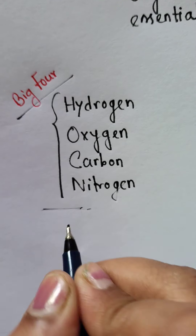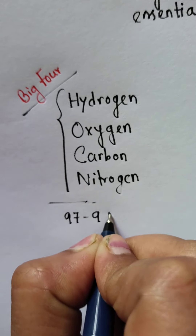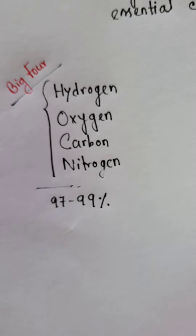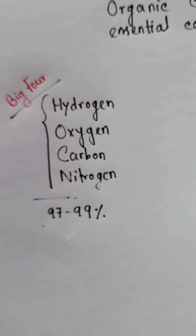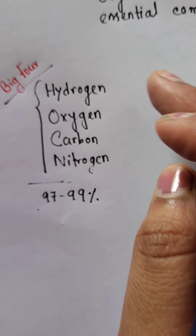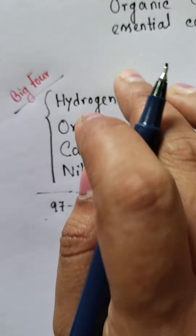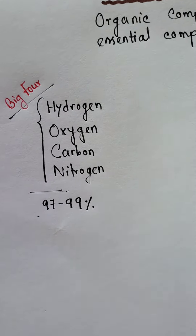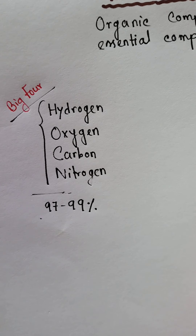Actually, 97 to 99 percent of the body of a living organism is comprised of these four elements — that's why they are called the Big Four. Besides hydrogen, oxygen, carbon, and nitrogen, there are certain other materials, like sulfur.